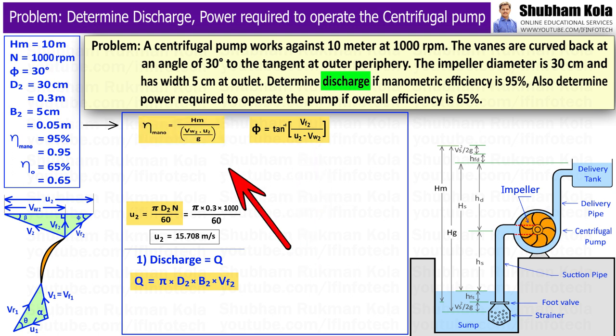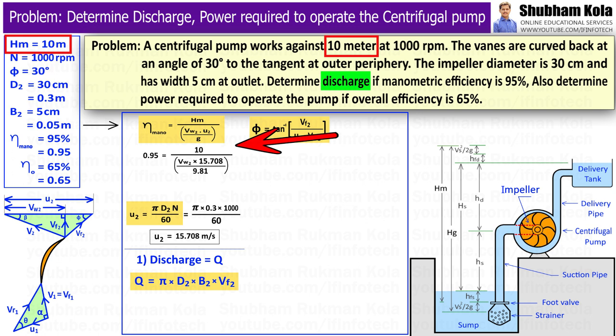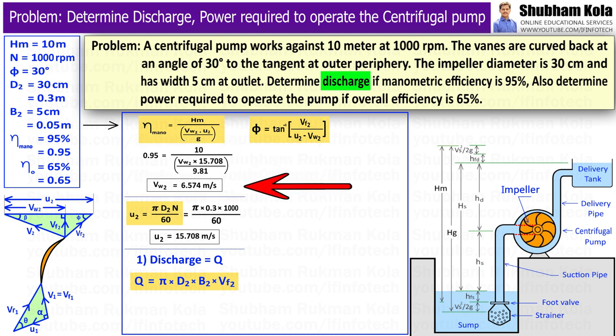To calculate Vw2, we will use manometric efficiency equation because manometric efficiency is given in problem as 95%. Manometric efficiency is given by the ratio of manometric head HM divided by head imparted by impeller, Vw2 into U2 divided by g. Here manometric head HM is given in problem as 10m, and we had already calculated U2 as 15.708m per second. So here only unknown is Vw2. By calculating this, we will get Vw2 as 6.574m per second.